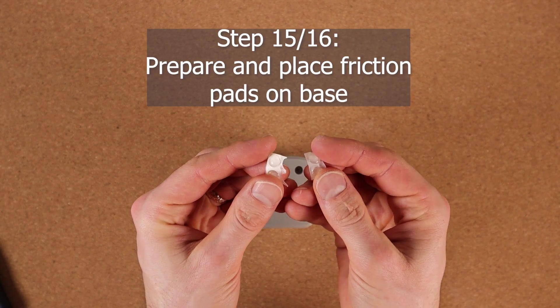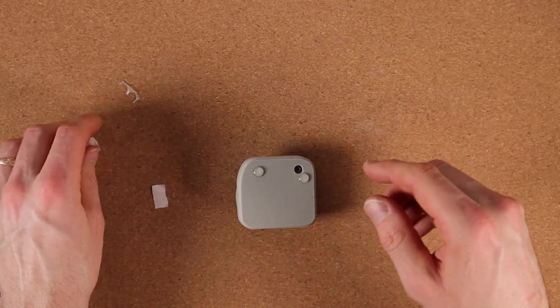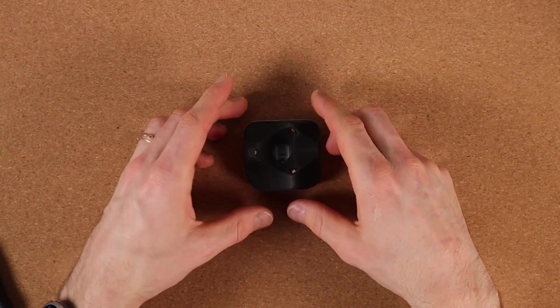Now we put the friction pads on the base. Reasonably spaced out on the corners. Something like that should be sufficient.